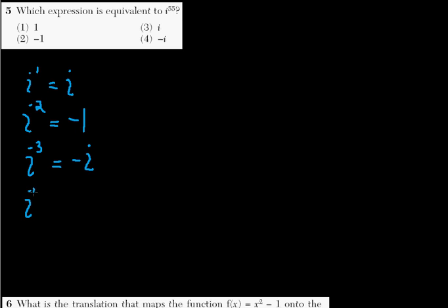And i to the 4th is negative i times another i, or i squared times i squared. Either way, it's plus 1. So you have negative 1 up here, and plus 1 here.